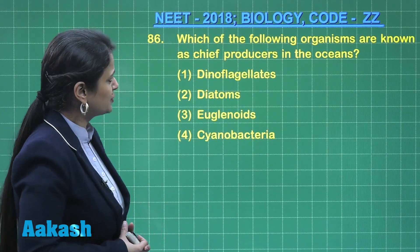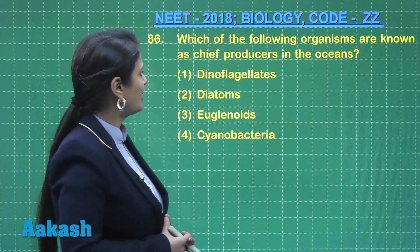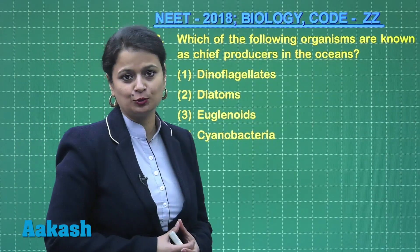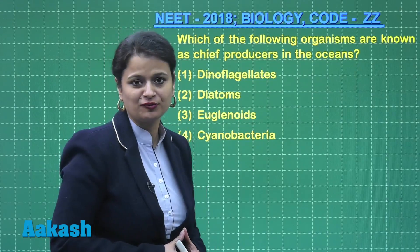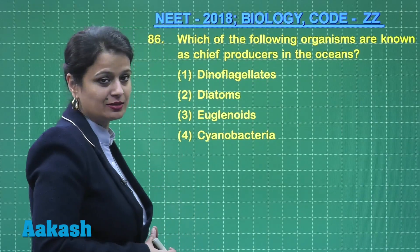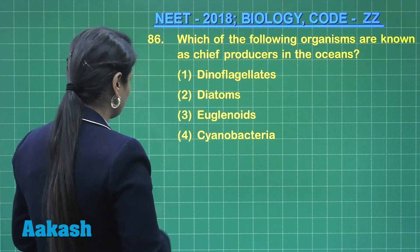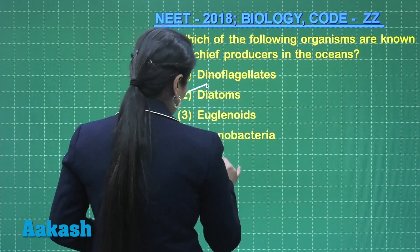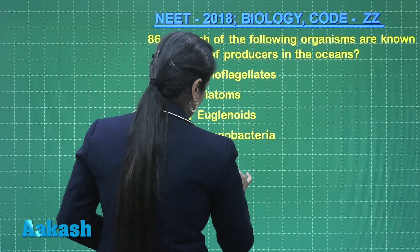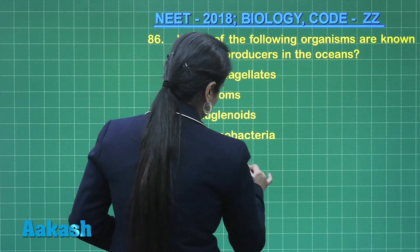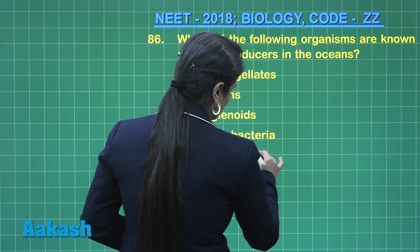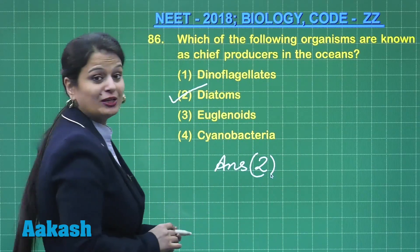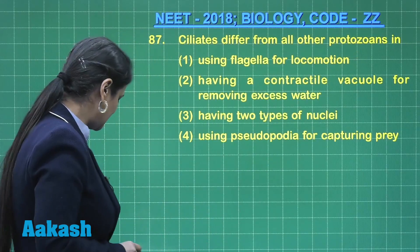Question number 86: which of the following organisms are known as chief producers in the ocean? Autotrophic microorganisms which are chief producers represent diatoms, so the right answer for this question is option number 2.